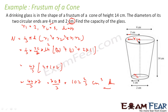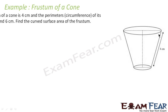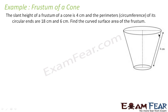Very simple — you just have to identify r1 (the bigger radius), r2 (the smaller radius), and the height, then apply the formula directly. Now let's take one more example. The slant height of the frustum of a cone is 4 centimeters.